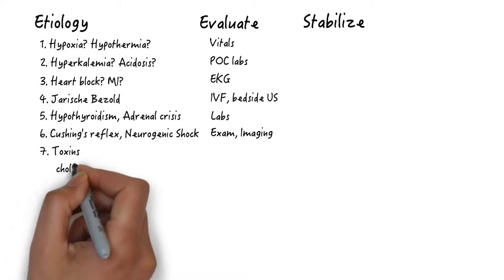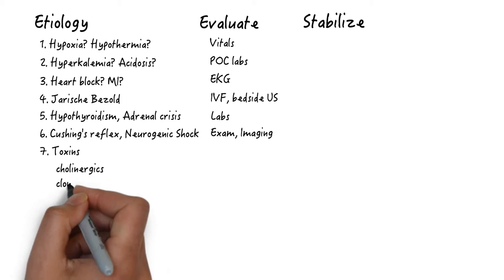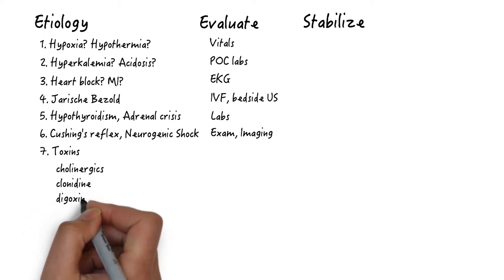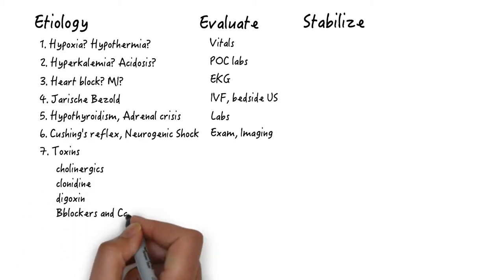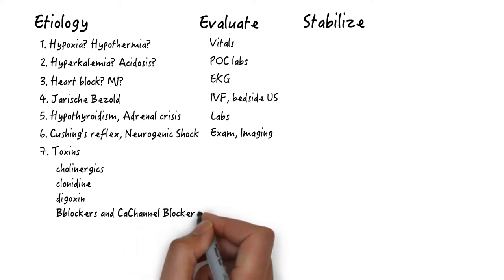The four classes of toxins that induce bradycardia include cholinergics, clonidine, digoxin, beta blocker, and calcium channel blockers. Unfortunately, there are no labs or drug screens that can help you out here. Only history and physical will clue you in. This is what makes toxin-induced bradycardia so difficult.